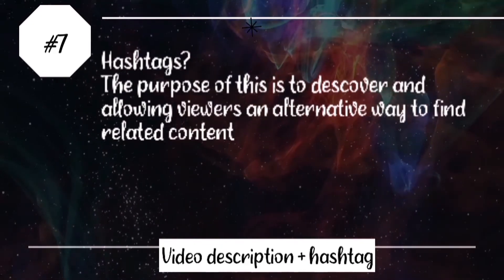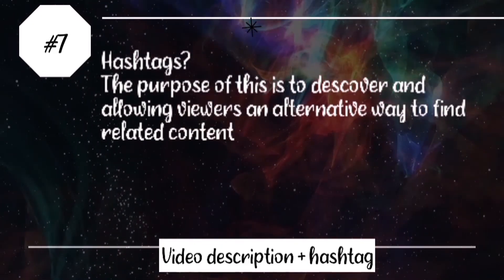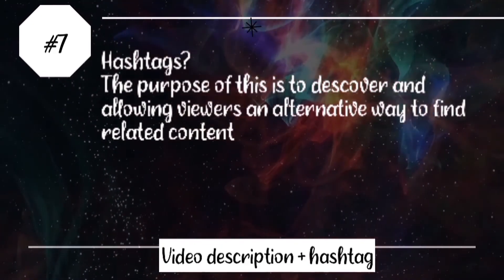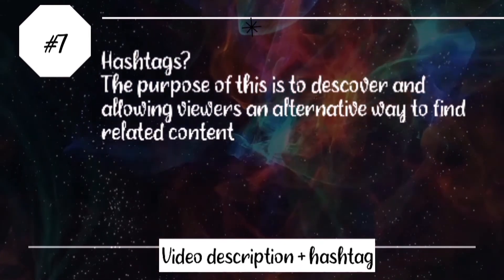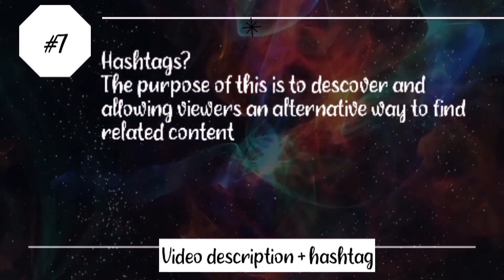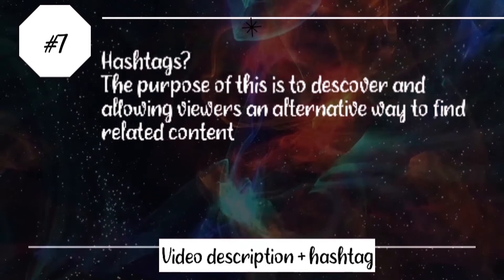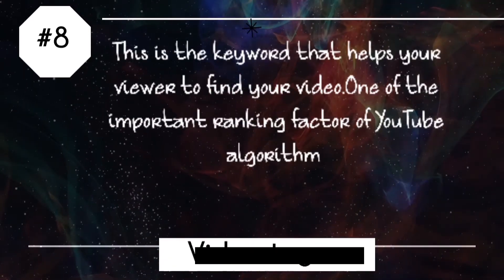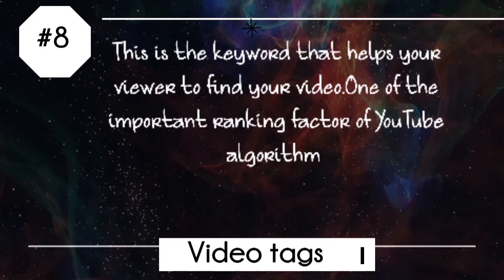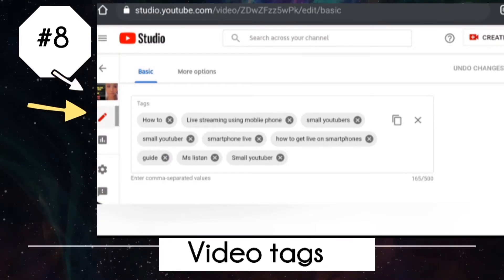You may also add hashtags under your description details. This will help viewers find an alternative way to discover related content. Another powerful part of your video is the video tags — this is one of the important ranking factors of the YouTube algorithm.